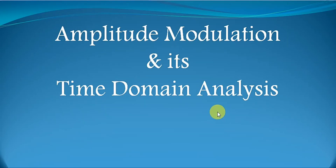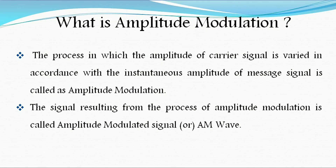Welcome back to uLearn Education online channel. In today's video we are going to see the concept of amplitude modulation and how the time domain signal is derived from its amplitude modulated wave. Modulation is a process of changing either the amplitude, frequency, or phase of a carrier signal varied in accordance with the amplitude of the message signal. Amplitude modulation is a process in which the amplitude of a carrier signal is varied in accordance with the instantaneous amplitude of the message signal.